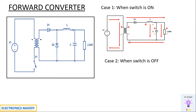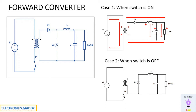Now Case 2: when the switch is off, the circuit is open. According to the property of an inductor, it does not allow a sudden change in current, so it reverses its polarity and acts as an energy source according to Lenz's law. It reverses its polarity to minus and plus. Consequently, the secondary terminals of the transformer also become minus and plus due to mutual induction. According to the dot convention, D1 will be reverse biased since minus is connected to it, and D2 will be forward biased since plus is connected to it.